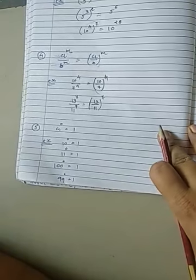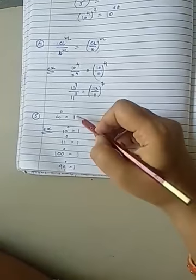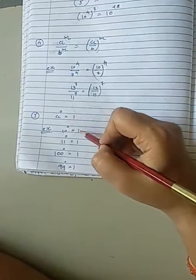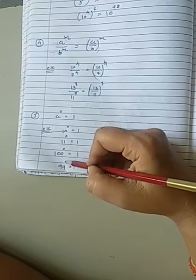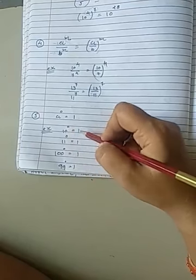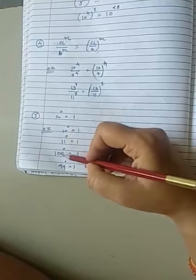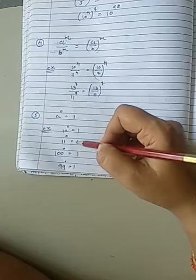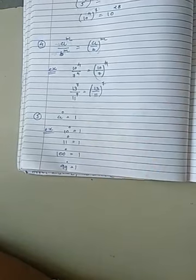And last one: a raised to 0 is 1. It means anything raised to 0 is 1. If you give any number power 0, like 10 raised to 0 is 1, 11 raised to 0 is 1. However big the number is, if its power is 0, then its value will be 1. That was your fifth rule.